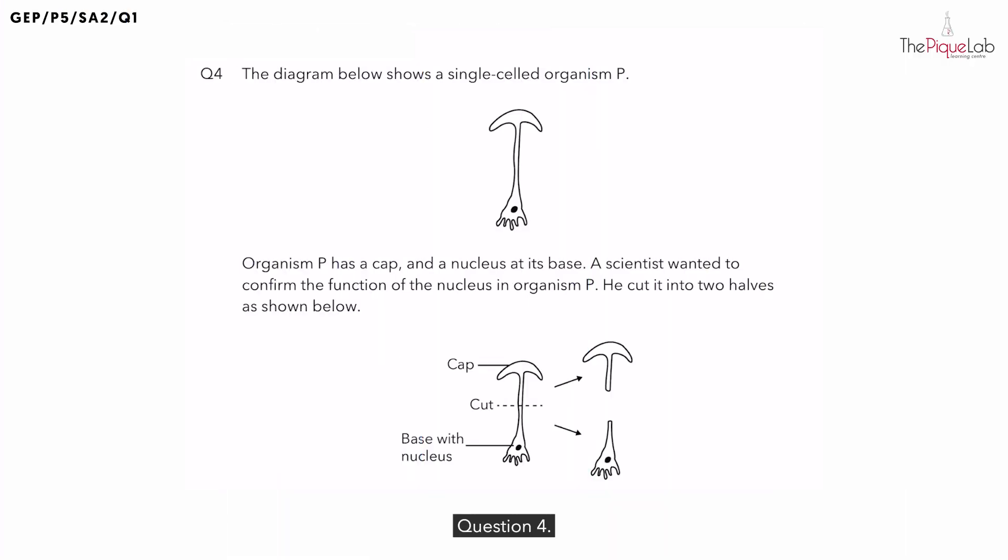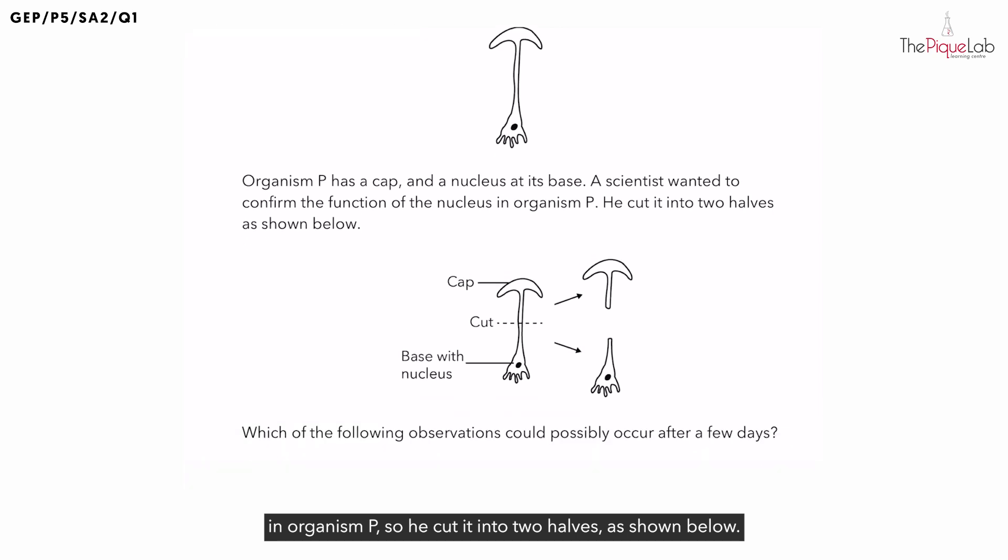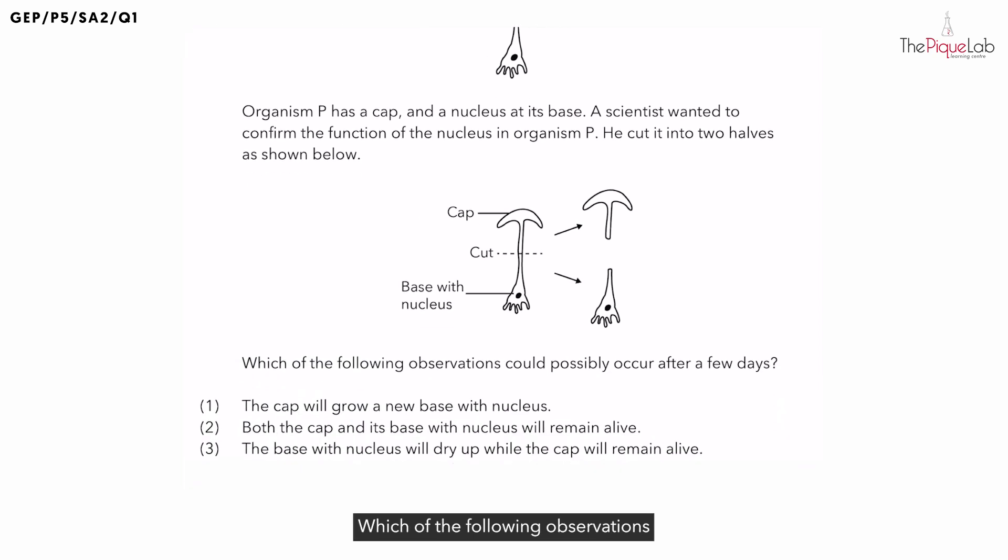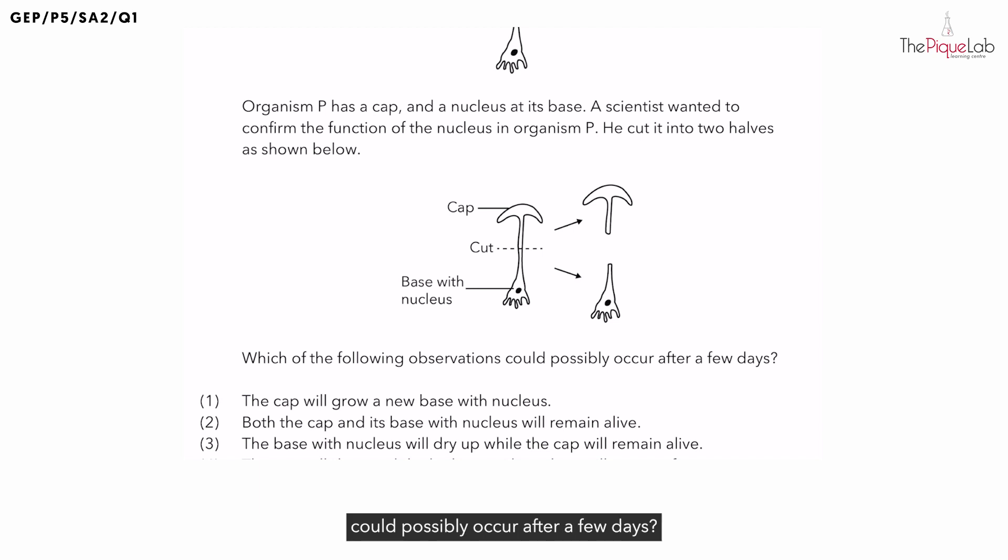Question 4. The diagram below shows a single celled organism P. Organism P has a cap and a nucleus at its base. A scientist wanted to confirm the function of the nucleus in organism P, so he cut it into two halves as shown below. Which of the following observations could possibly occur after a few days?